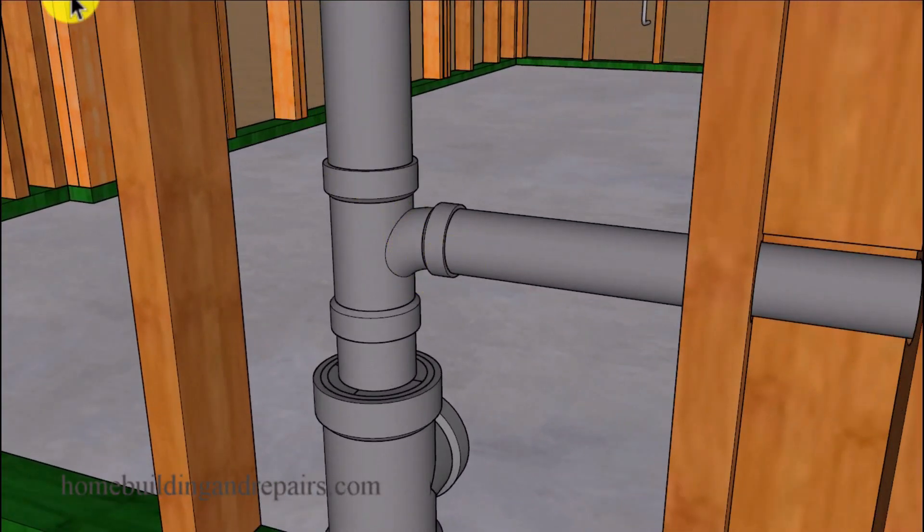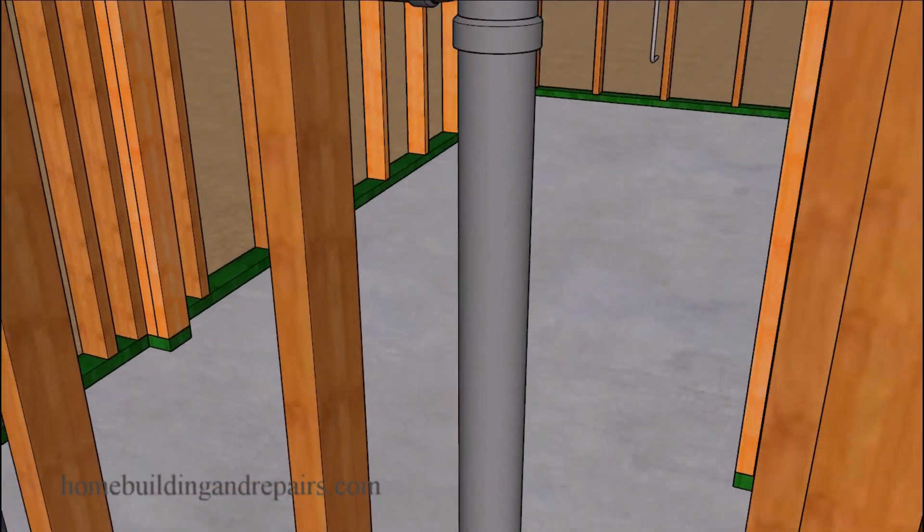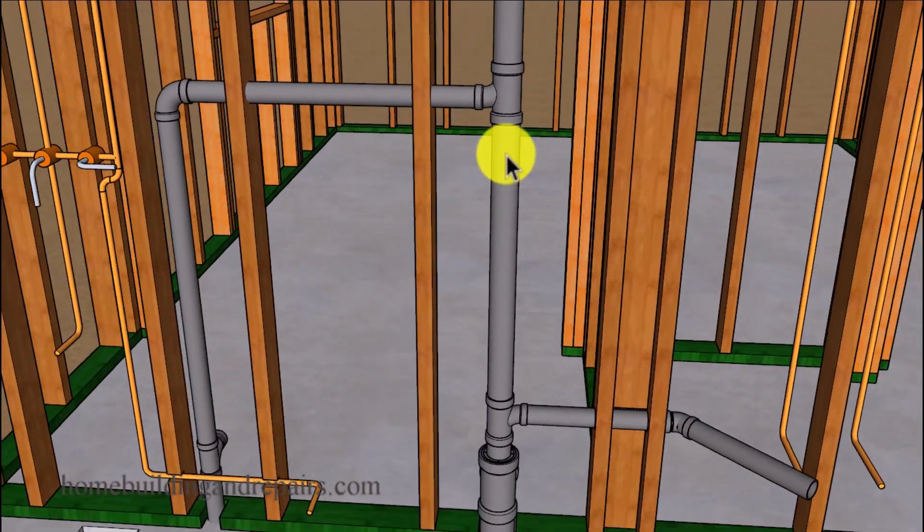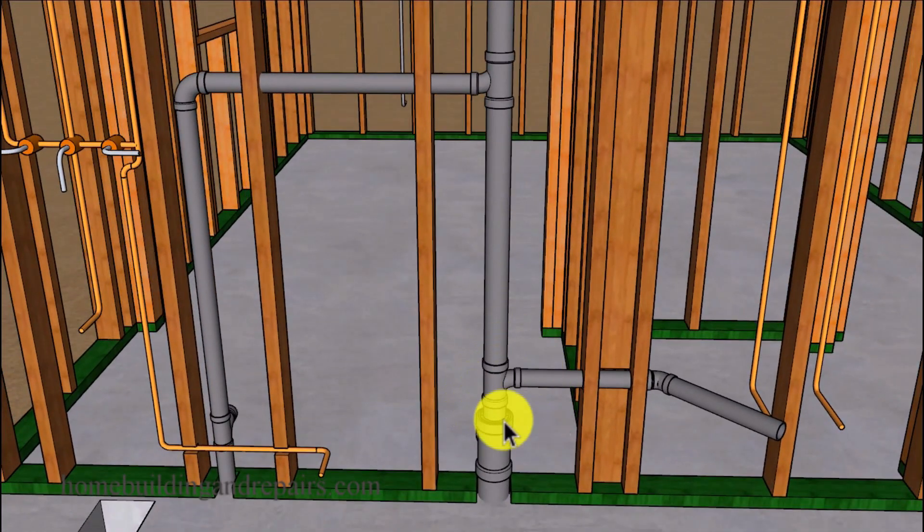But it makes sense to me, because if I was going to connect another horizontal section of vent to a vertical vent pipe, the sanitary tee will need to be upside down. So it will not be installed in the same direction as the one for the drain, where the water is sloping towards the drain.